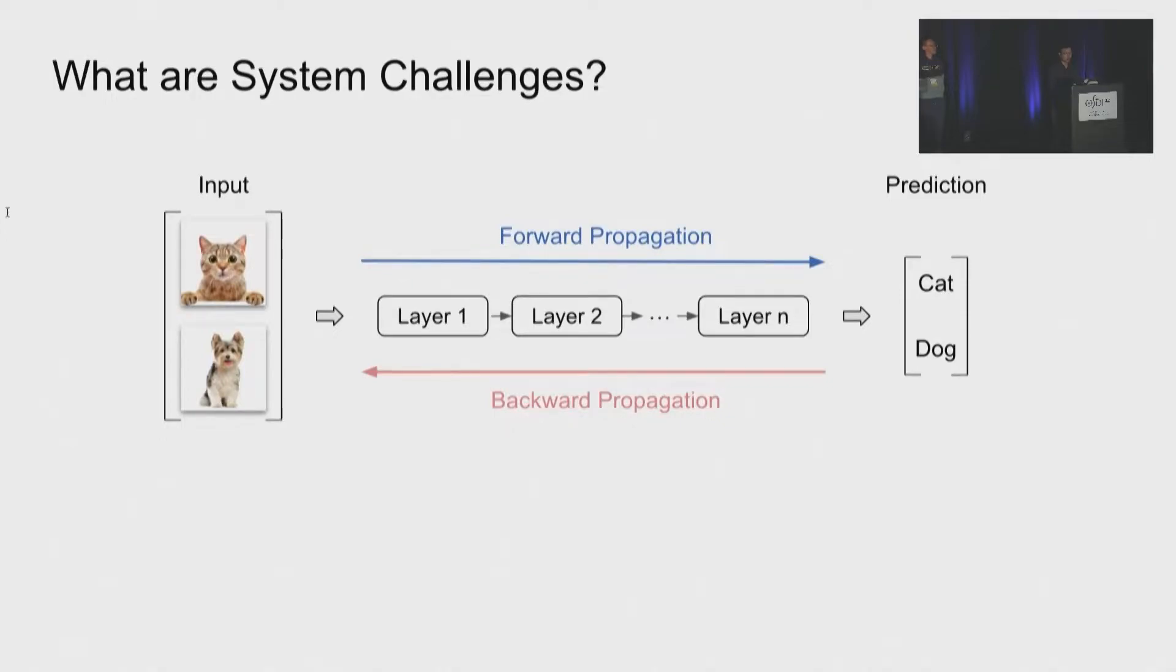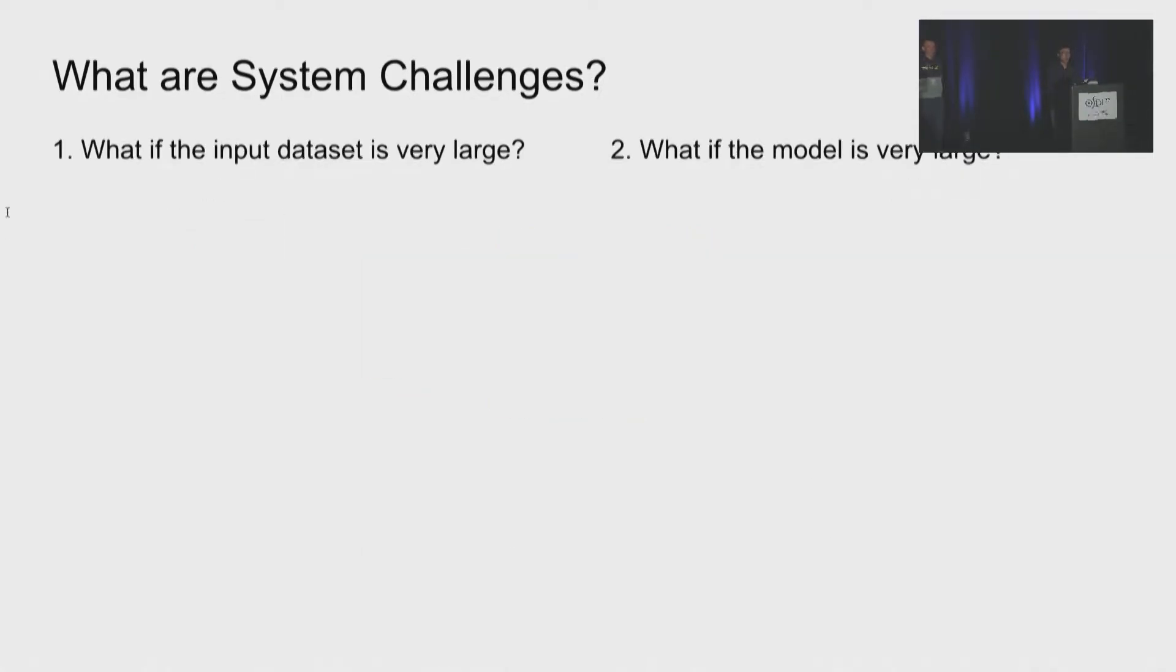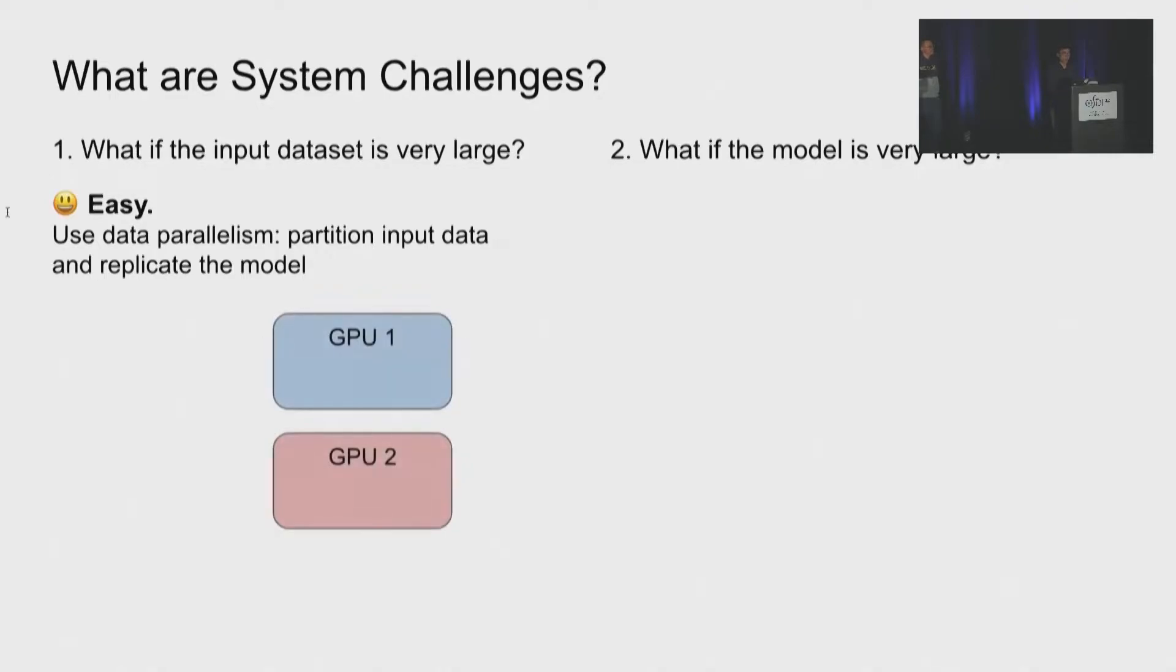So now, if I want to scale this training pattern, we will face two problems. First, what if the input data is very large? For example, we want to train on millions of images. Second, what if the model or the layers are very large? For example, we want to train a model with billions of parameters. The difficulty of these two problems are different. The first problem is easy and has been well studied. It's called data parallelism. We can partition the input data and replicate the model. Here are two GPUs. We can replicate the model on all GPUs and feed different input batches to different GPUs to parallelize the computation.